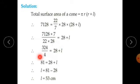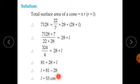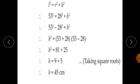By transposition: 7128 times 7 upon 22 times 28 equals 28 plus L, giving 324 upon 4 equals 28 plus L, therefore 81 equals 28 plus L, so L equals 81 minus 28, therefore L equals 53 cm. The slant height of the cone is 53 cm.